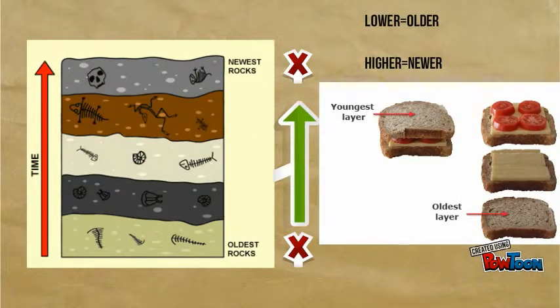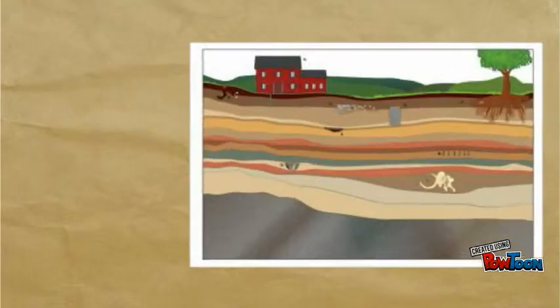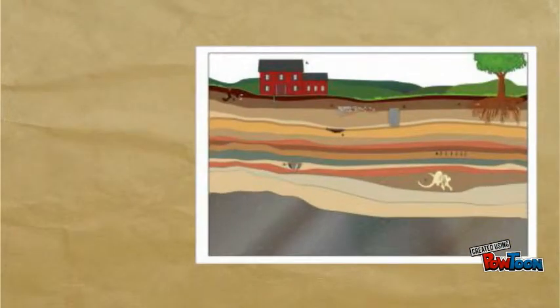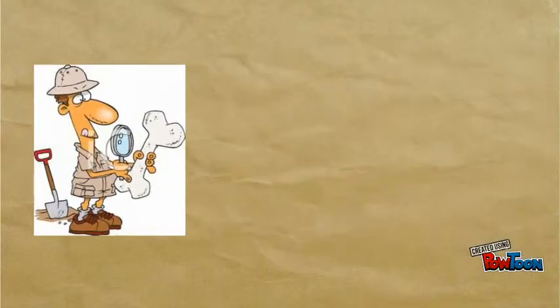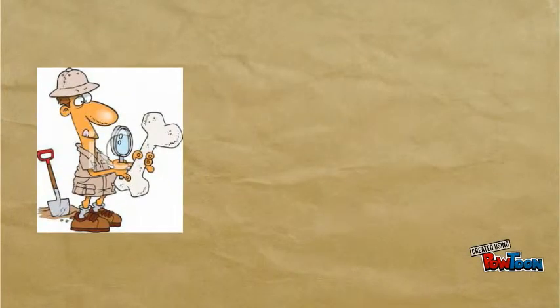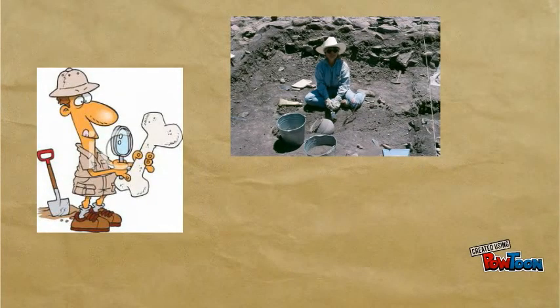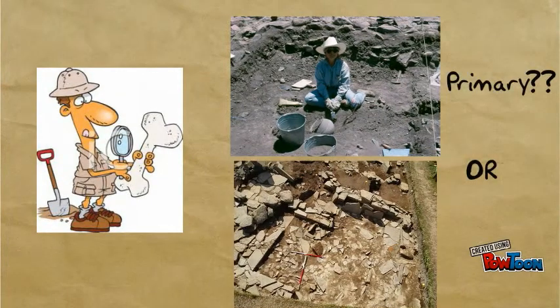The law refers to the sequence of deposition. However, there can be exceptions. For example, strata may be composed of redeposited material, such as when water erosion moves soil into lower or older levels. An archaeologist will often have to judge if items are in an undisturbed primary context or are in secondary context.